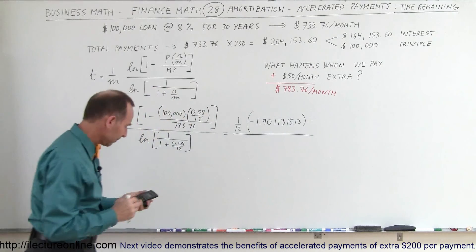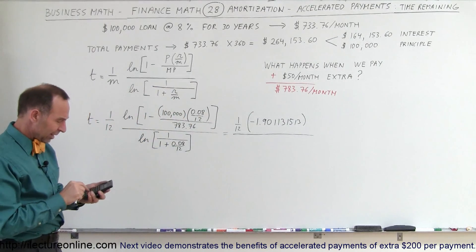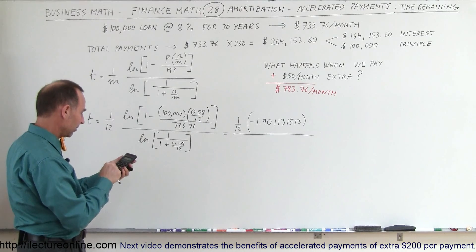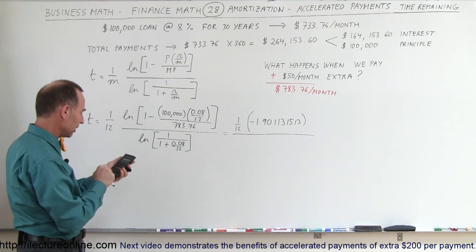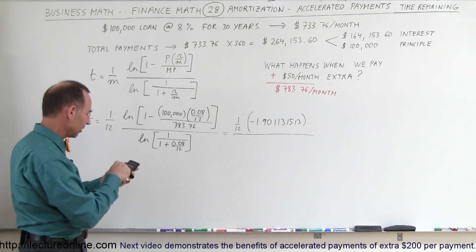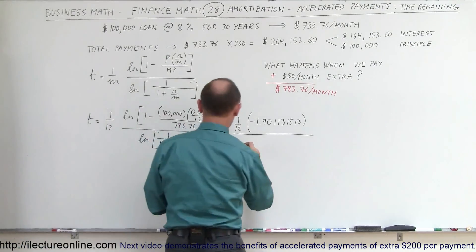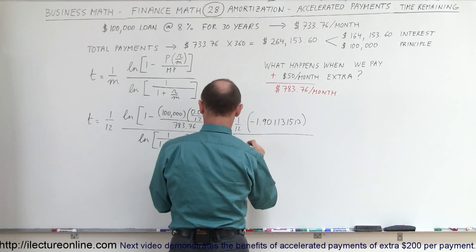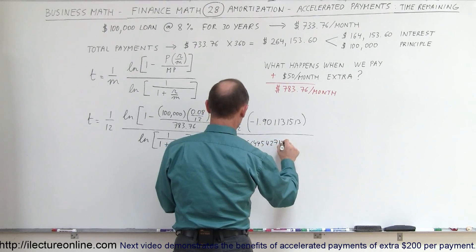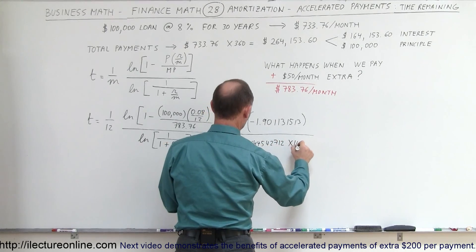And we're going to divide that by that. So we're going to divide that by 0.08 divided by 12 plus 1 equals, that's in the denominator, so I have to move that to the numerator. I take the natural log of that, and that will give me minus 6.644542712 times 10 to the minus 3.